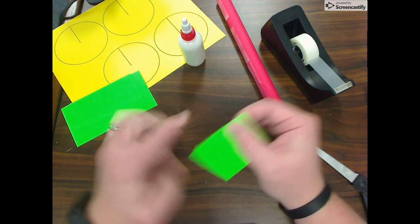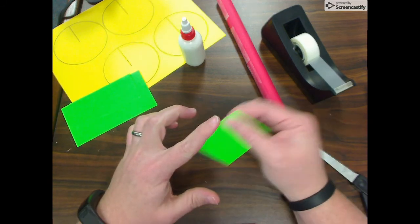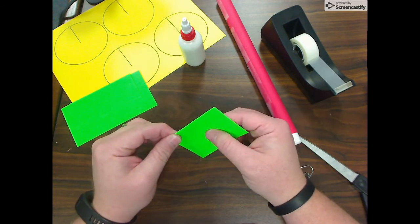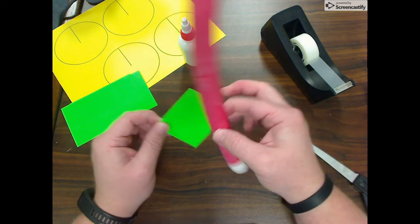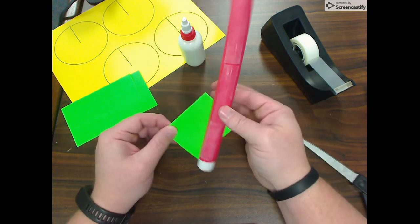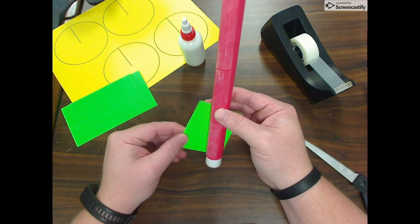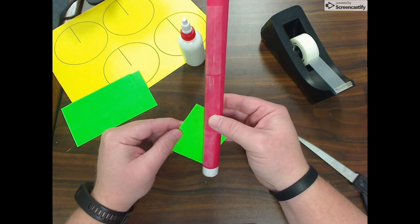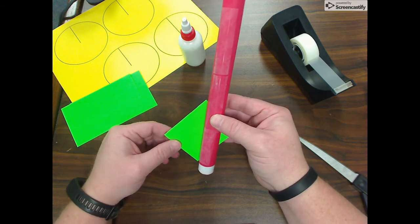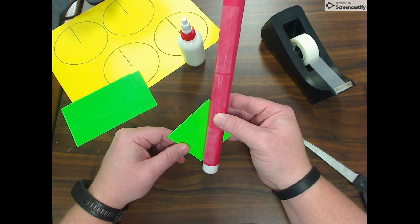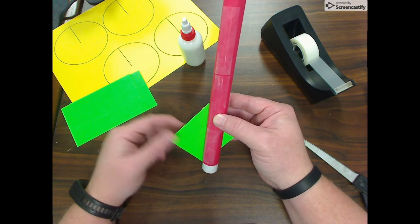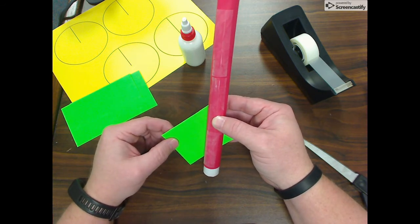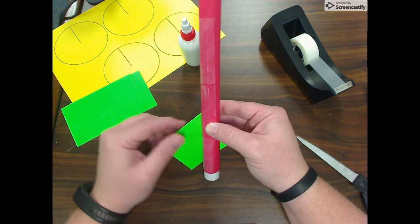Okay, this folded side is going to be the leading edge of your rocket fin, and then you can kind of set it here with your tube and figure out what shape you want your rocket fins to be. If you want them to just be plain old triangles, you can do that. If you want to make them a little bit fancier, you can do that.